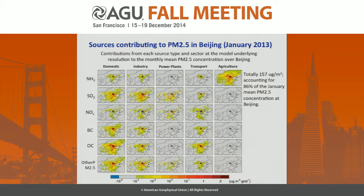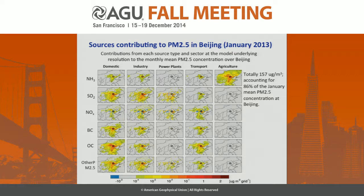Integrating the movie in time and focusing on total PM2.5, we get this picture showing where PM2.5 over Beijing is coming from for January 2013 monthly mean. We know PM2.5 can form from ammonia emissions, SO2 emissions, NOx, and also primary BC, OC, and dust. Based on bottom-up estimates, each source can be separated into different sectors: domestic, industry, power plants, transport, and agriculture. The values here are in units of micrograms per cubic meter, telling us how much PM2.5 is coming from each source type.